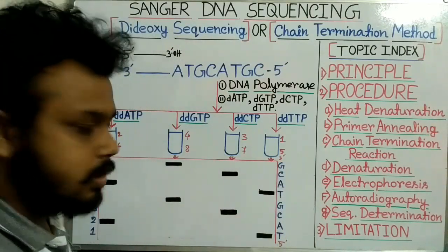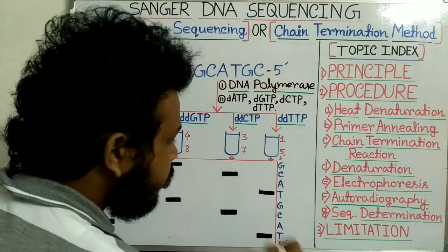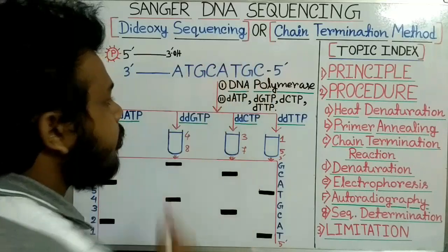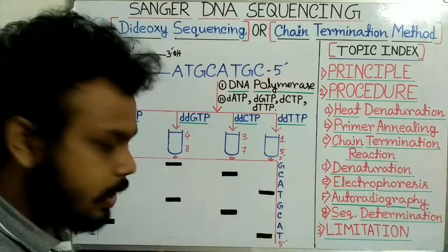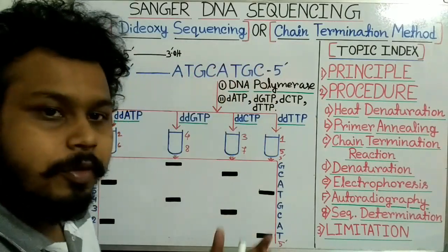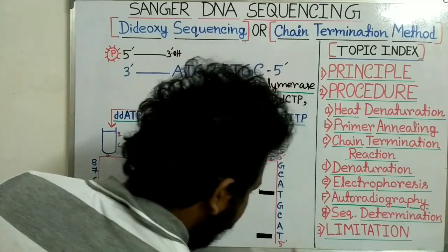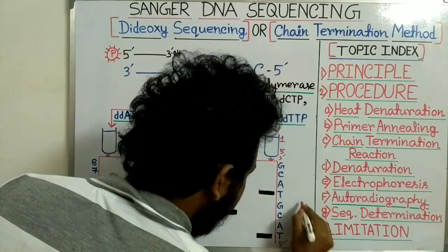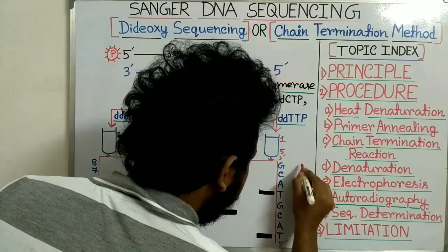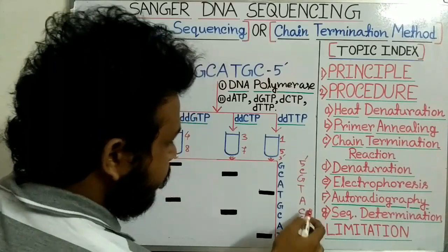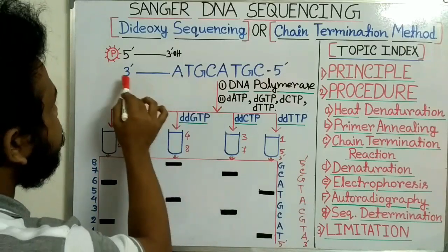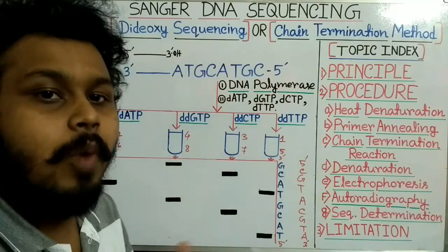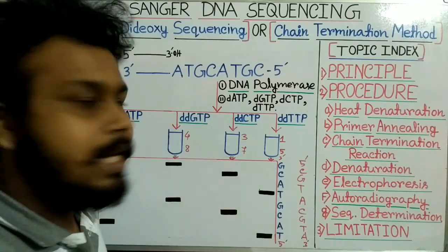The one-nucleotide fragment is the first nucleotide and represents the 5' end, and the eight-nucleotide fragment represents the 3' end. We now obtain the sequence of the newly synthesized strand, but remember we actually want the sequence of the original template strand. To get the template sequence, we make the complementary base pairs: the newly synthesized strand reads 5'-TGCATGCATGC... so the complementary template reads 3'-ATGCATGC-5'. In this way, we determine the DNA sequence by Sanger sequencing.